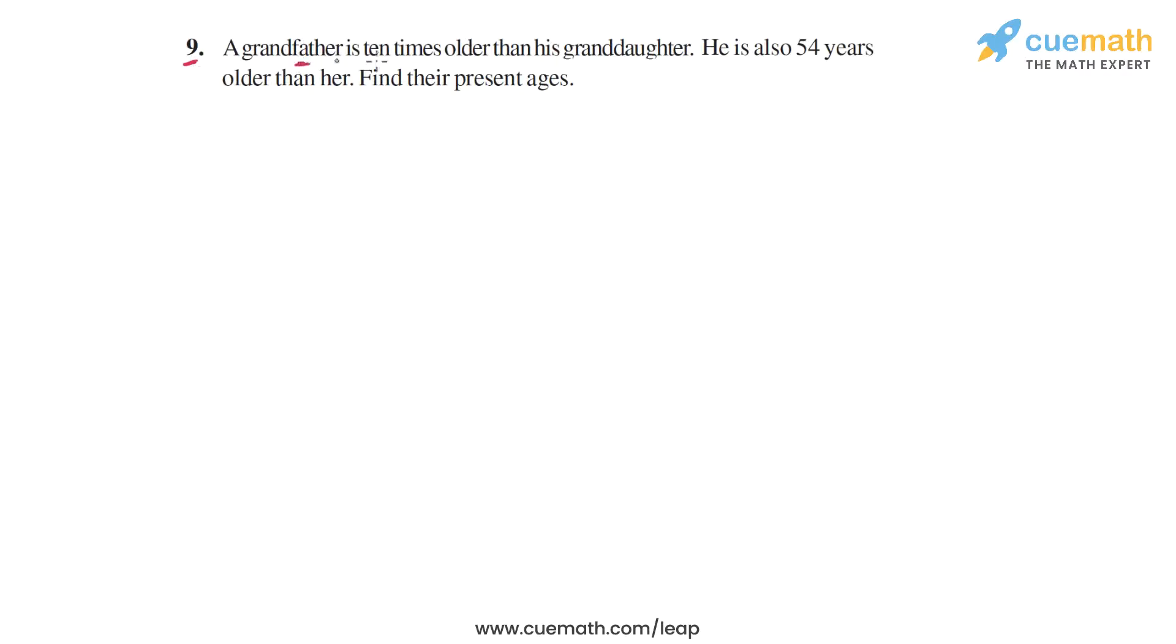Question 9 says a grandfather is 10 times older than his granddaughter. He is also 54 years older than her. Find their present ages. We are given the grandfather's age as a multiple of 10 of the granddaughter's age, and we're also told that the difference in their ages is 54 years.